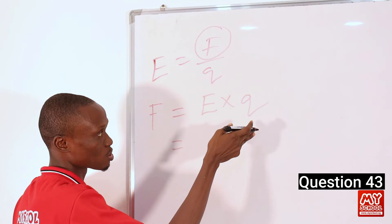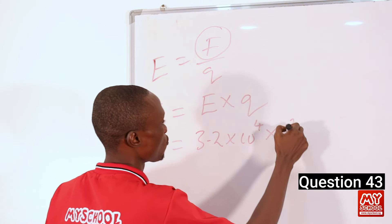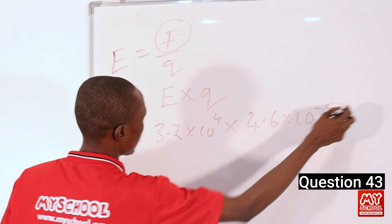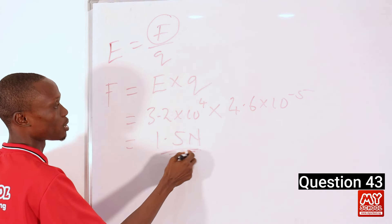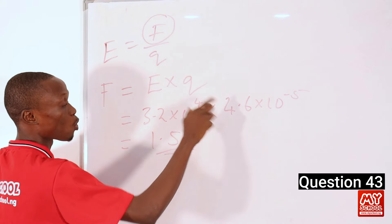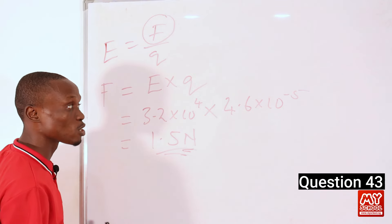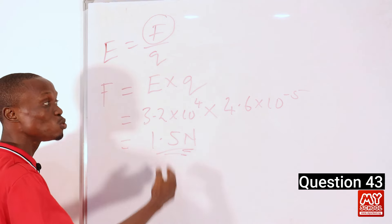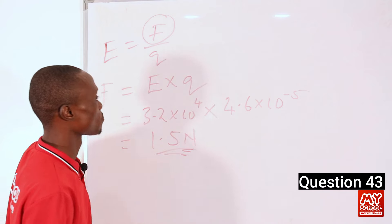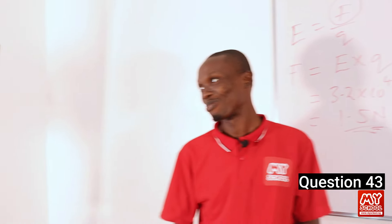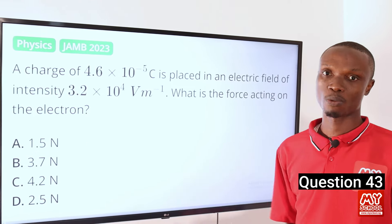The values are given to us: electric field intensity is 3.2 × 10⁴, times the quantity of charge 4.6 × 10⁻⁵. Multiplying these together gives approximately 1.5 Newtons. Sometimes you may need to approximate to match the options given. So from our calculation we got 1.5 Newtons, which makes option A the correct option.